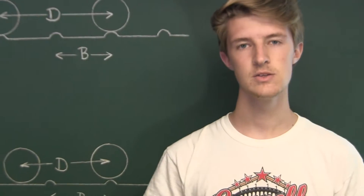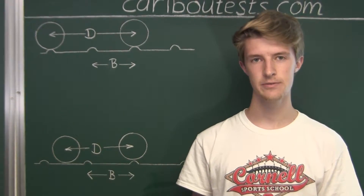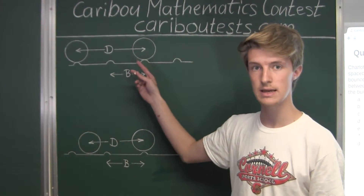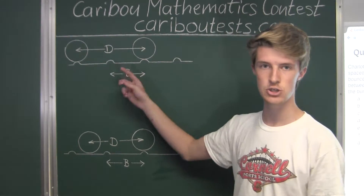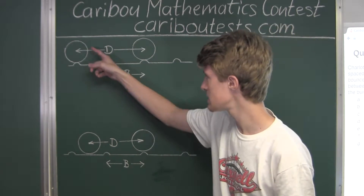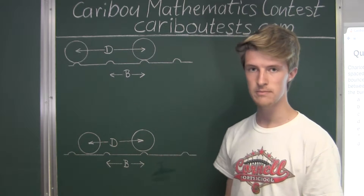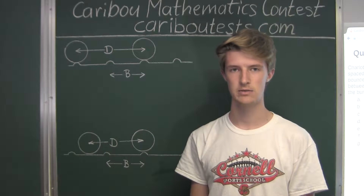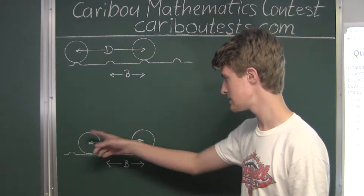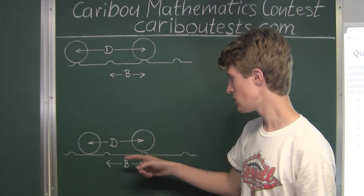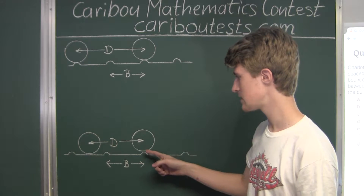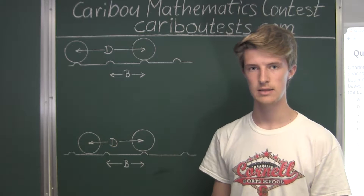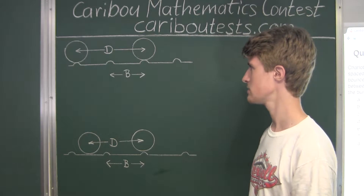Okay, so we have two cases to investigate. The first case is when both tires are bouncing at the same time, and that is shown here in a picture where both tires are at the top of a bump. The second case is when both tires are not bouncing at the same time, and that is shown in a picture where the front tire is at the top of a bump but the back tire is not.